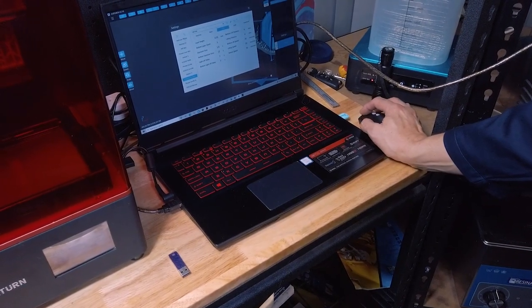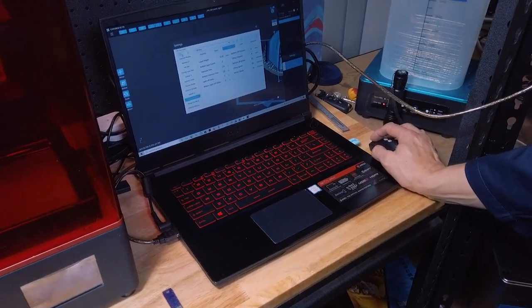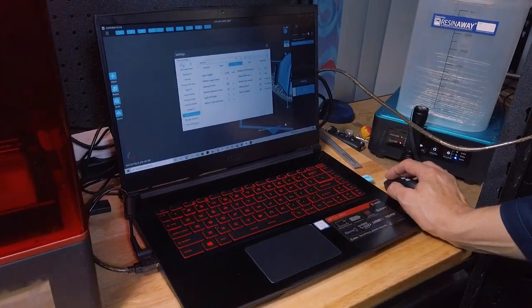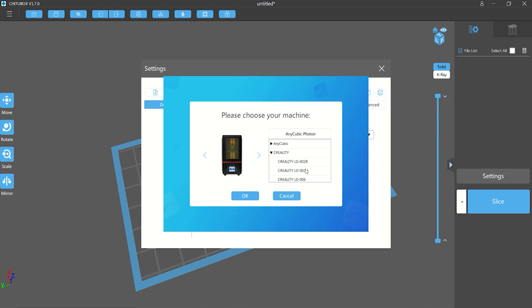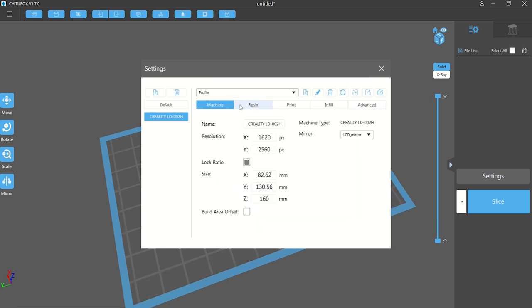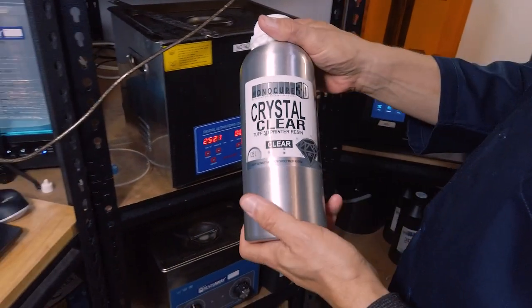In ChituBox we're going to have a look at the settings for the LD-002H. If you have the latest version of ChituBox you'll see that there is in fact an H. We now have the H listed there so you can add that to the list of printers and then you can define the settings that you're going to use. I'm going to set up a new profile for a new resin that is based on Tough that is called Crystal Clear. This is in our new Pro range.